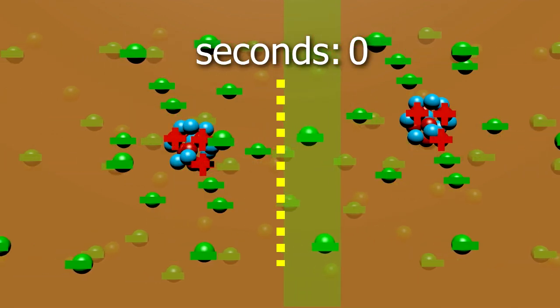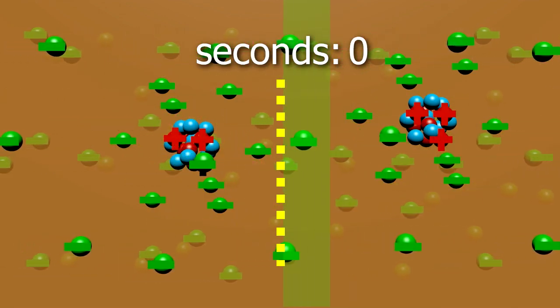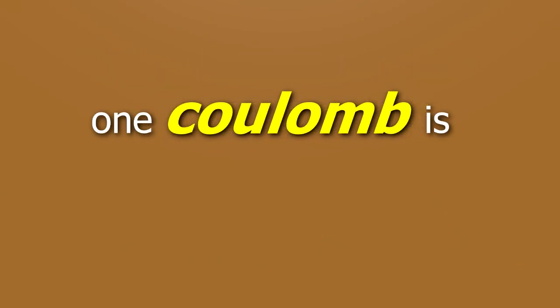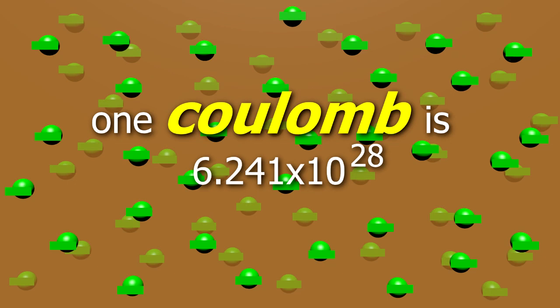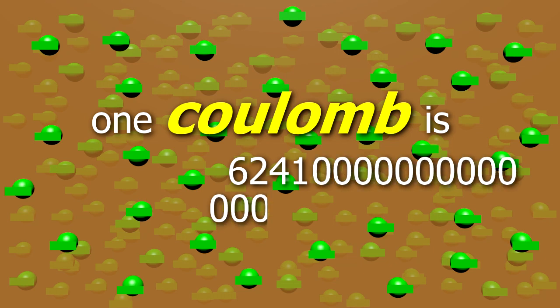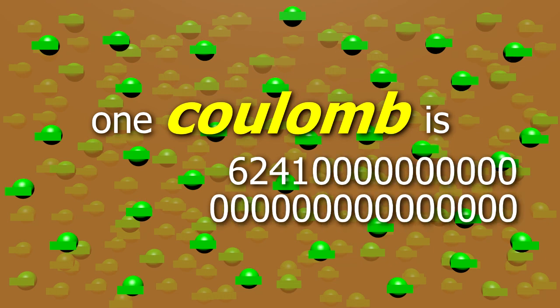The amount of negative charge that passes here every second is the amount of current. Charge is measured in a unit called the coulomb. To get just one coulomb of charge, it takes 6.241 times 10 to the 28 electrons, or 6241 followed by 25 zeros number of electrons. So one coulomb of charge is a heck of a lot of electrons.